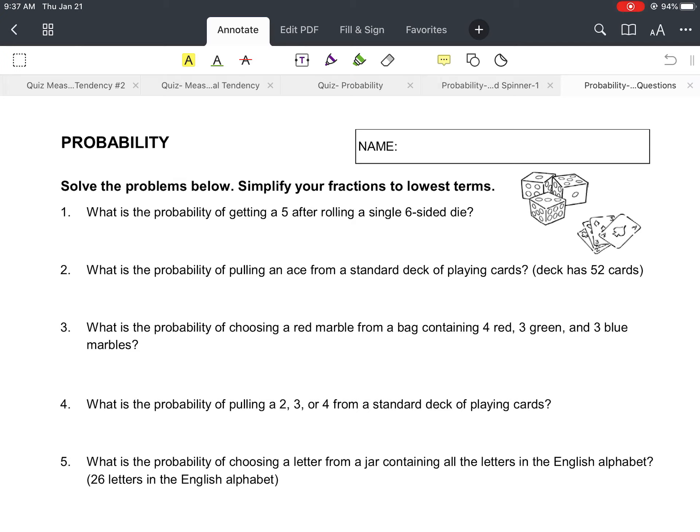So if we look at number one, it says what is the probability of getting a five after rolling a single six-sided die? So think about whenever you're playing like a board game and you have a dice and you roll it.